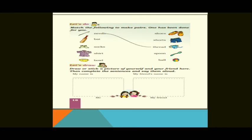The pairs to match are: needle with thread, bat with ball, socks with shoes, shirt with shorts, and bowl with spoon. Draw a line connecting each pair.